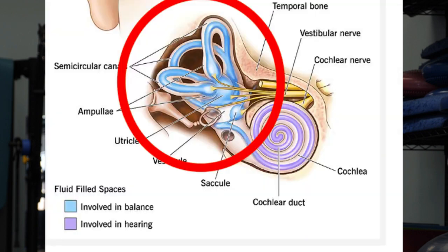The inner ear looks a lot like a snail. There are really two parts: the cochlea, which is the part that looks like the shell of a snail — a spiral chamber filled with hair cells. When the malleus, incus, and stapes conduct sound vibrations into the cochlea, the fluid inside it vibrates, and special cells lining that chamber detect frequencies of sound. That's how someone hears.